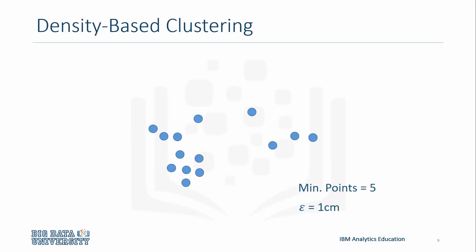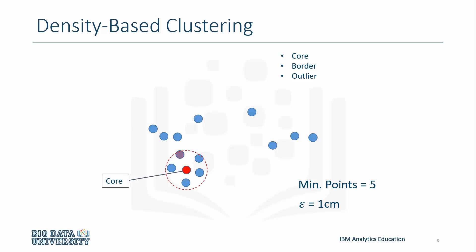There are three classifications of points: core, border, and outlier. A core point has at least minimum points within its epsilon neighborhood, including itself. These are points that are at the interior of a cluster.